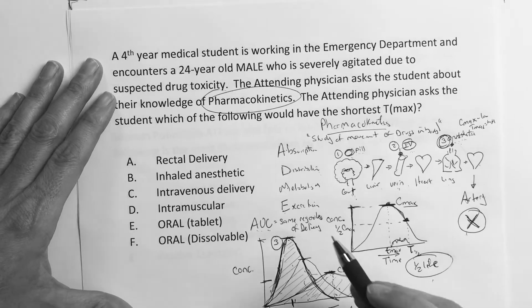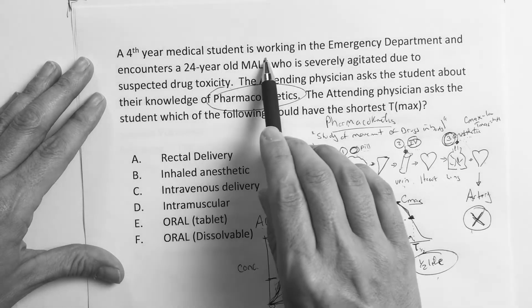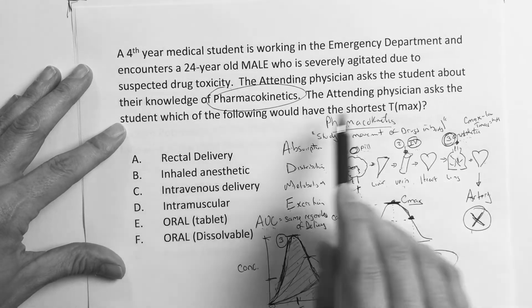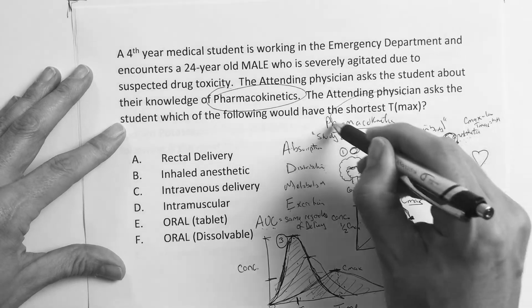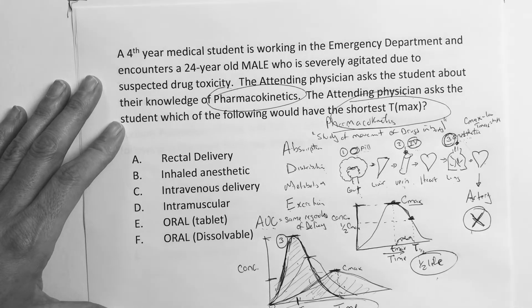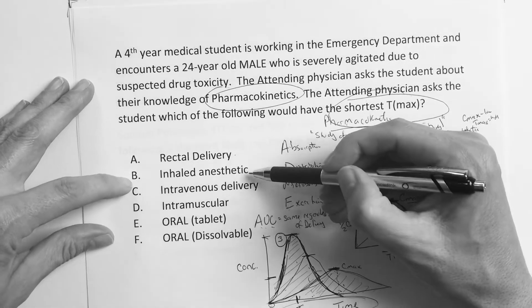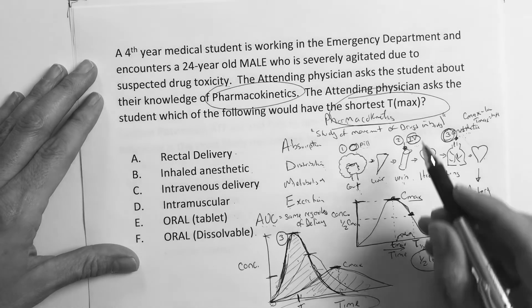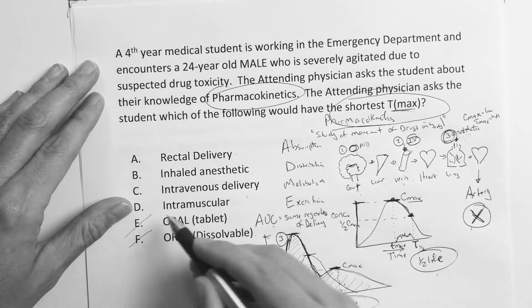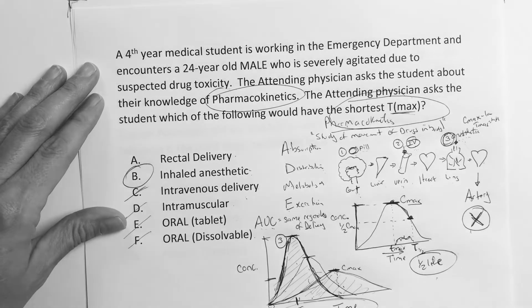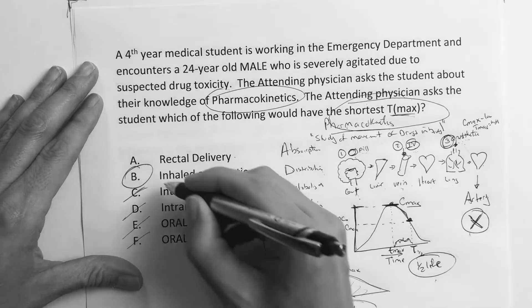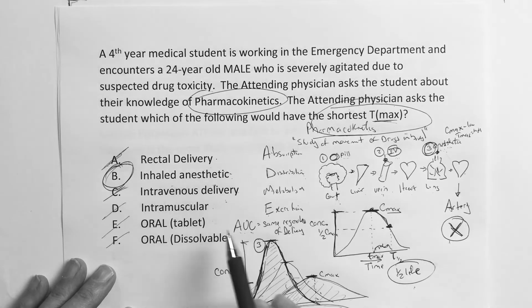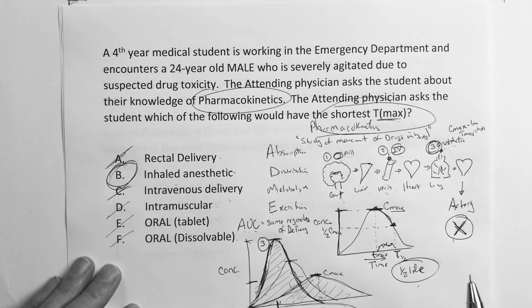Going back to the question: the attending asks which of the following would have the shortest T-max. The options are rectal delivery, inhaled anesthetic, IV delivery, intramuscular, oral dissolvable tablet, and oral tablet. We know oral has the longest T-max, so that's out. Comparing the rest, the one with the quickest — shortest — T-max is the inhaled anesthetic. Rectal would take much longer than that. The answer is inhaled anesthetic.